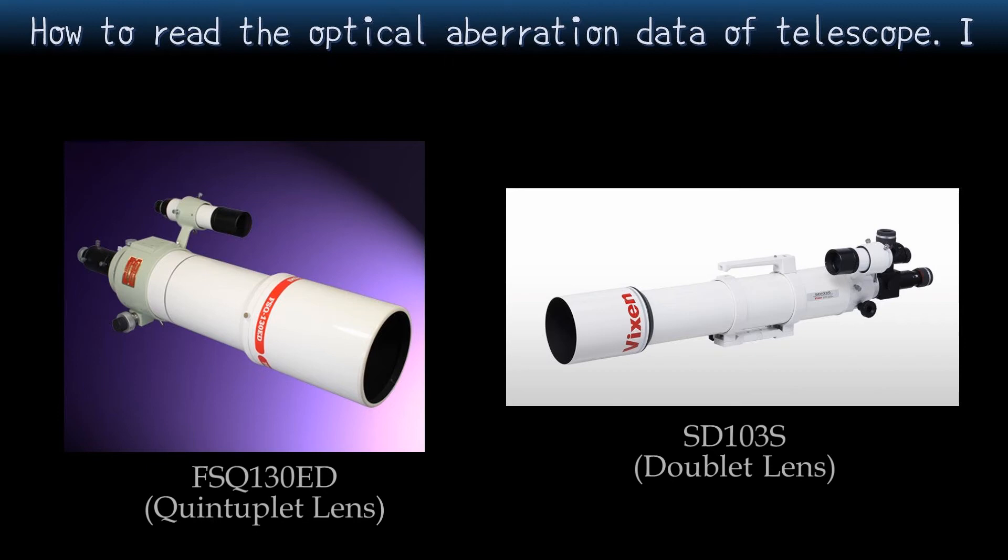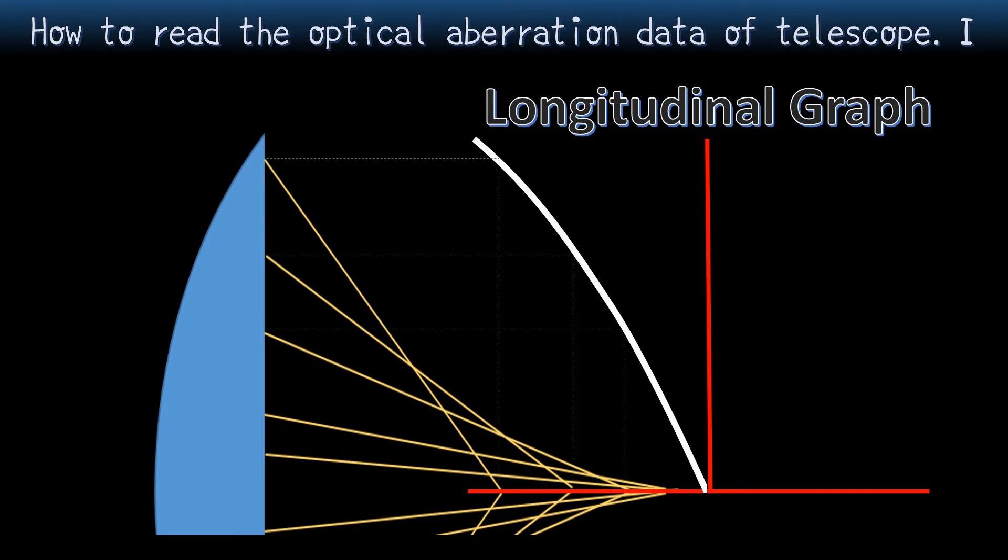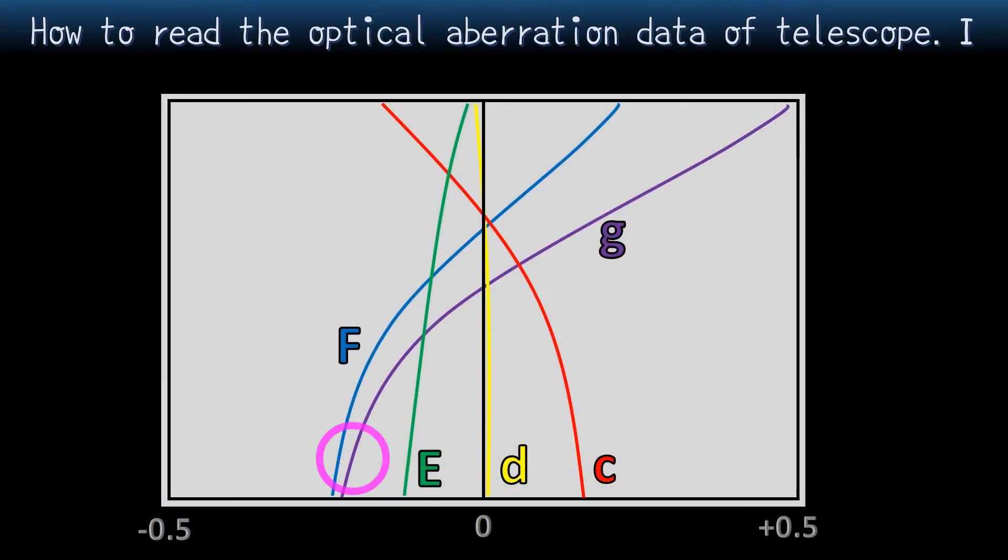Well, I explained chromatic aberration and spherical aberration so far. If such a gap is represented in the longitudinal graph, it would look like this. The vertical axis shows the distance from the center, and the horizontal axis represents the position of the focal point. In this figure, the purple light entering from near the center is in focus close to the objective lens. However, even in the same purple color, entering from the periphery focuses at a more distant point. And this graph exactly shows its state for each wavelength.